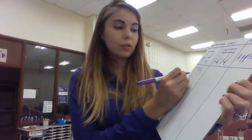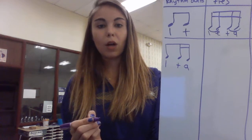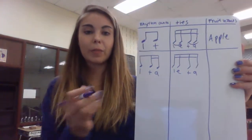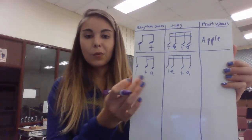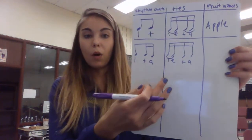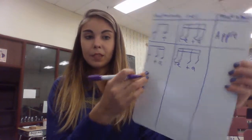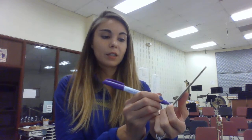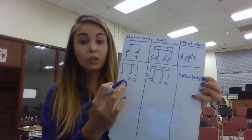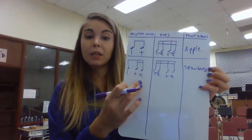Our next rhythm is an eighth note and two sixteenth notes. We say 'one and a' — write that underneath. Draw your four sixteenth notes in the ties column and write one, e, and, a. Figure out where the tie goes to make it sound like 'one and a.' The eighth note is longer and happens first, so the tie goes first. One and a — it's the same. The fruit name for that is 'strawberry,' because you hold out the 'straw' longer, and that first note is longer because an eighth note is longer than two sixteenth notes. Strawberry — one and a.